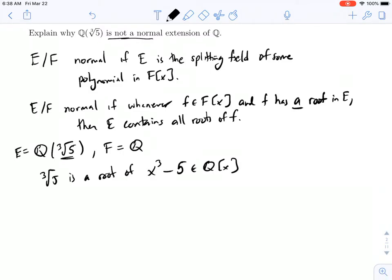As we've shown in another video, the roots of this polynomial are the cube root of 5, the cube root of 5 times alpha, and the cube root of 5 times alpha squared, where alpha is e to the 2 pi i over 3.